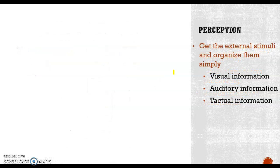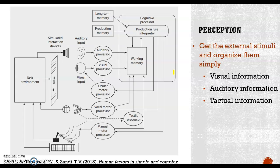Now let's discuss the first stage, which is perception. It means that we get external stimuli and organize them. There are three major types of information we usually use: visual information, auditory information, and textual information. As shown in this figure, the first type is auditory input — information that we hear. The second type is visual input — things that we see. And the last one is motor information — things we touch or feel. These three types of information are the major resources of our input.